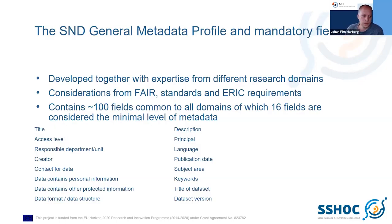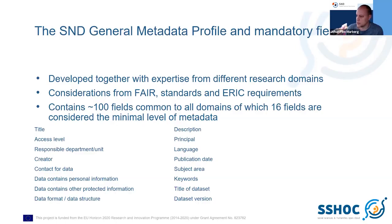These 16 fields are: title, access level, responsible department or unit, creator, a contact person for the data, information if it contains personal or otherwise protected information, data format or data structure, a description of at least 50 characters, principal language, publication date, subject area, keywords, title of the dataset, and the dataset version. These are what we consider a minimal effort from a researcher to be published in the SND research data portal.